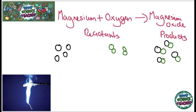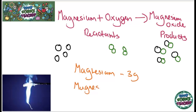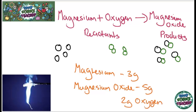For example, if you start off by burning three grams of magnesium and you end up making five grams of magnesium oxide, then you must have reacted it with two grams of oxygen. This is because nothing can be created or destroyed — everything is conserved. We conserve mass in science.